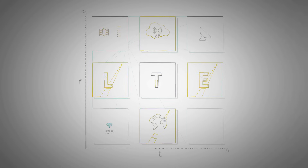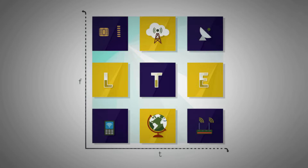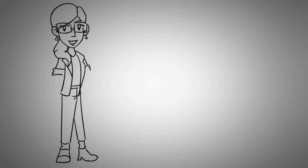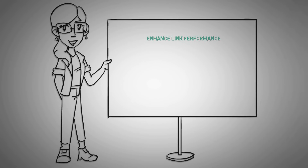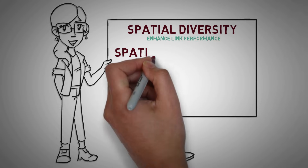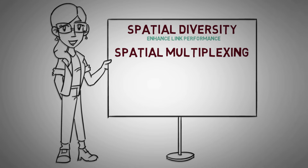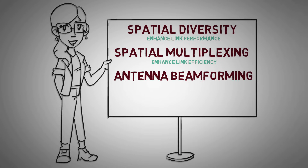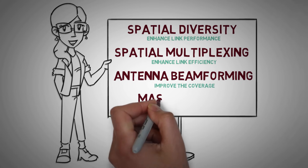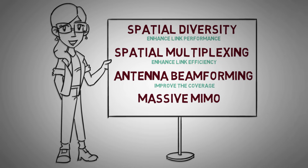Hello everyone, welcome back to the fundamentals of 4G. Today we will discuss how link performance is enhanced using spatial diversity. We will also discuss how spatial multiplexing is used in MIMO to enhance link efficiency. And finally we will discuss some futuristic technologies, such as antenna beamforming, which will dynamically serve the user to improve the coverage, and massive MIMO, which has the potential to increase the link capacity by several fold.